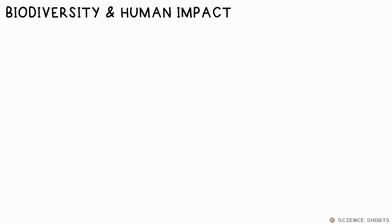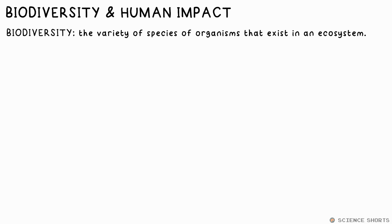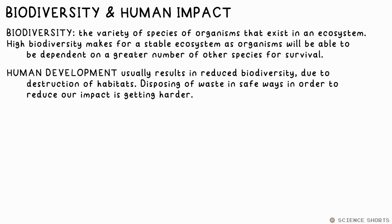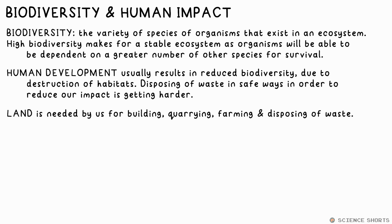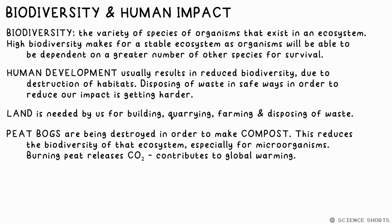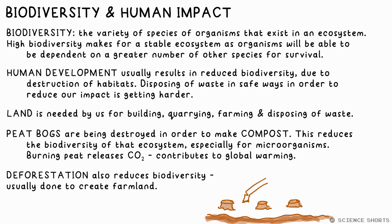Biodiversity just means how many different types of organisms you have in an ecosystem. High biodiversity generally makes for a stable ecosystem, as organisms don't have to depend on one species for a resource. Human development usually results in lower biodiversity, and also poses problems when it comes to waste — we're having to find more ways of disposing of sewage, fertilisers, toxic chemicals, and atmospheric pollution. One factor is the land needed for building, quarrying, farming and disposing of waste. An example is the destruction of peat bogs to make compost, which affects the habitat of many organisms, and burning peat also releases CO2. Deforestation on a big scale flattens forests, reduces biodiversity, and it's often done to create farmland.